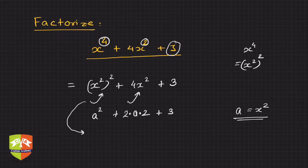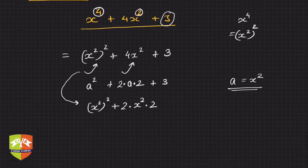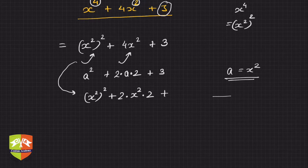Coming back to our original expression, we can write this as x squared squared plus 2 times x squared times 2. I will stop here and keep this plus sign open so that we don't forget to write 3 later on. Let's stop here and analyze this particular expression.